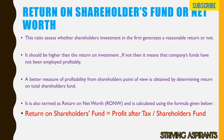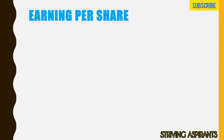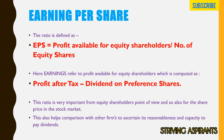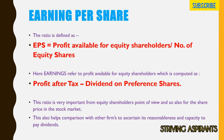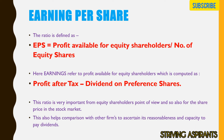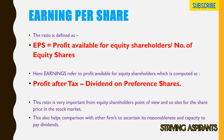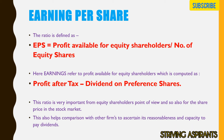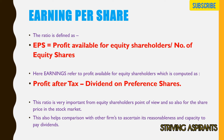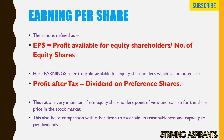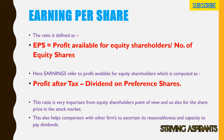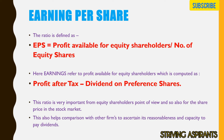Next is Earnings Per Share (EPS). The calculation is: Profit Available for Equity Shareholders divided by Number of Equity Shares. Earnings refer to profit available for equity shareholders, worked out as Profit After Tax minus Dividend on Preference Shares. This ratio is important from equity shareholders' point of view and also for the share price in the stock market. It helps in comparison with other firms and assessing capacity to pay dues.